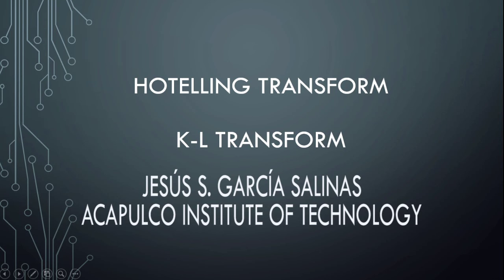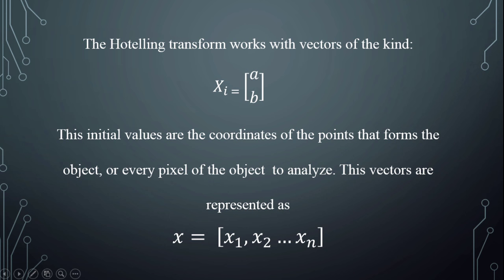Hi, I'm going to explain how the Hotelling transform, or KLT transform, is used. The Hotelling transform works with vectors of the kind xi equal to (a, b). These initial values are the coordinates of the points that form the object in an image, or every pixel of the object to analyze. These vectors are represented as x equal to x1, x2 to xn.